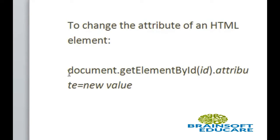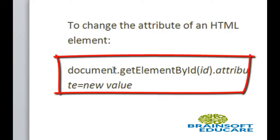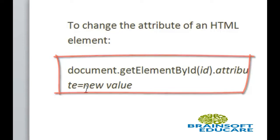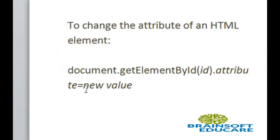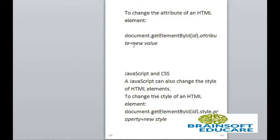This is the syntax: document.getElementById, which takes the id name as a parameter value, then dot attribute property equals any new value to replace the old value of that attribute of the HTML element.